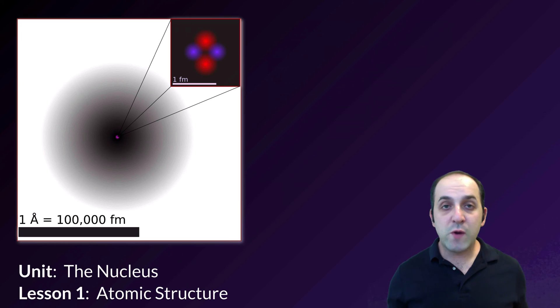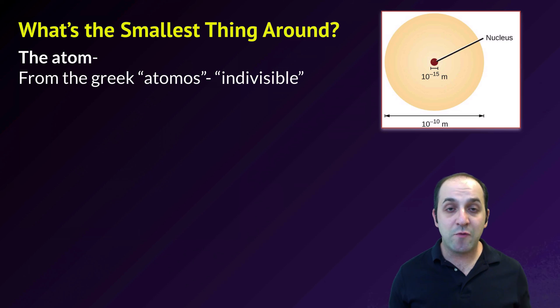Before we get too far into the nucleus and how it works, we're going to take one brief step back and just talk about overall atomic structure, a very basic introduction to what atoms are made of and how they function. For a long time it was thought that atoms were in fact the smallest unit of matter, and that's actually what the name means. Atom comes from the Greek 'atomos' which just means indivisible.